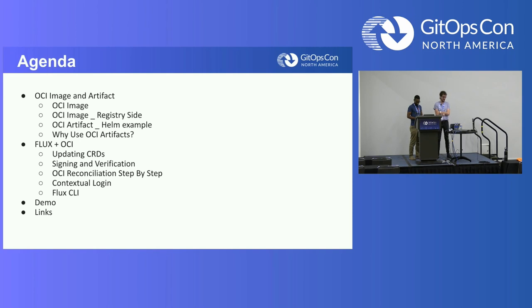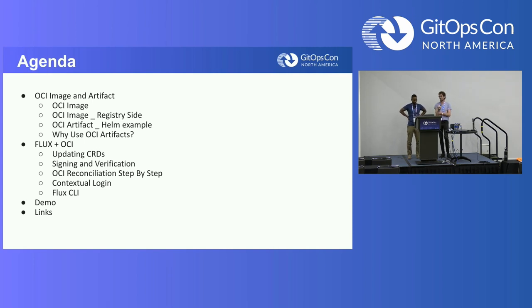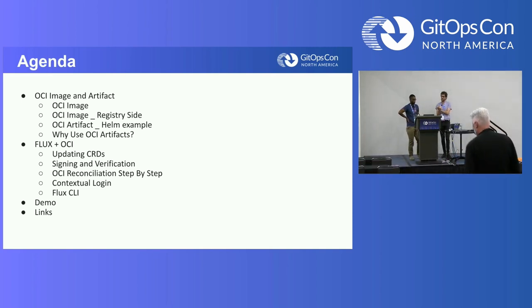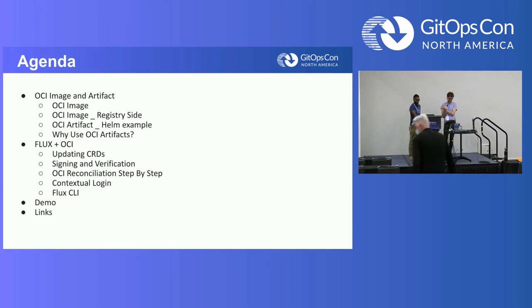Today we're going to be talking about the integration of OCI artifacts as sources in Flux. Flux has the concept of sources - they can be Git, S3 compatible buckets, Helm repositories, and now OCI repositories as a source for everything. We're going to start with an intro covering what OCI artifacts are, their advantages, and why we want to use them. We'll then cover new features in Flux around OCI artifacts, and finally have a demo with links at the end.